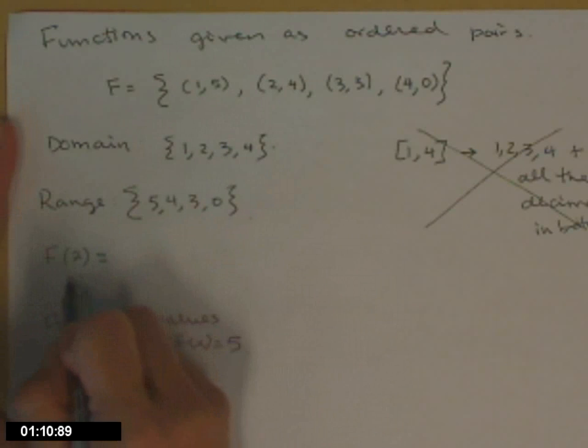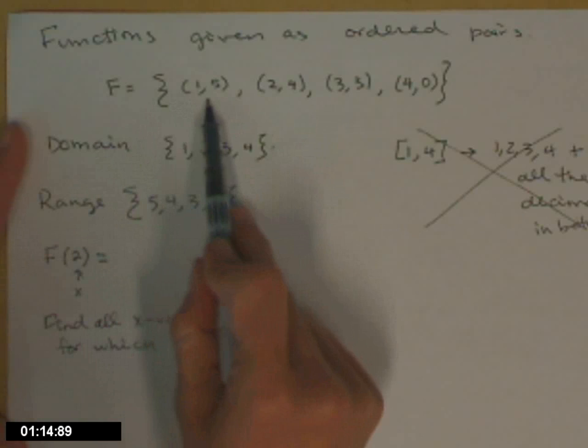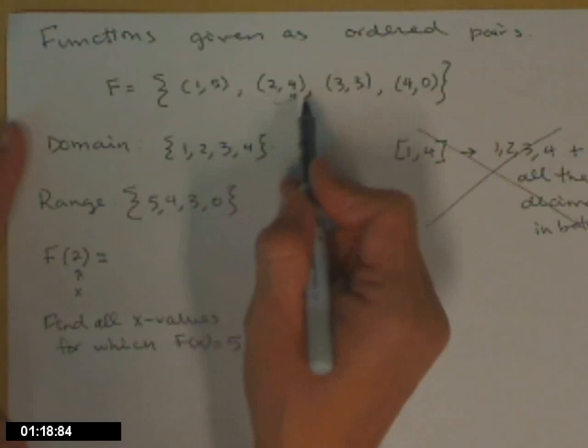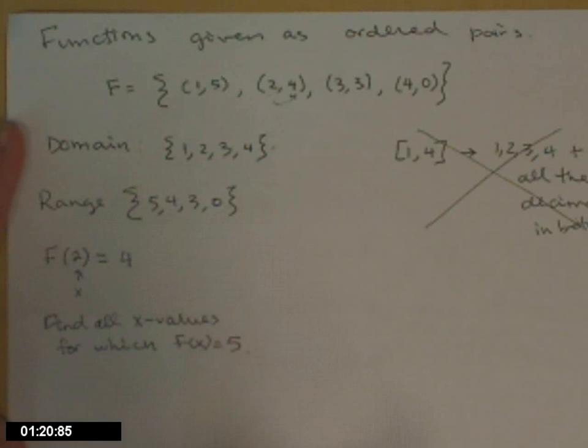f of 2. So remember, in the parentheses, these are x values. So I need to pick the pair that has an x value of 2. There's a 2, and its corresponding y value is 4.